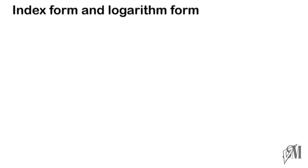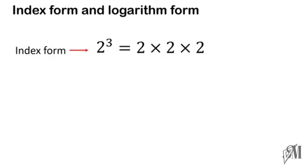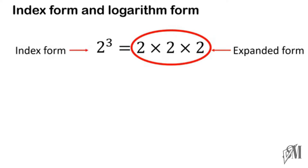First, let us see how to write the index form of a certain number in the logarithmic form. 2 to the power 3 is called the index form, and the expanded form of it is 2 into 2 into 2, which is 8. Therefore, 2 to the power 3 is equal to 8. In this case, 2 is the base, 3 is the power, and 8 is the answer.